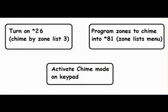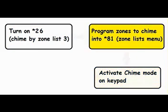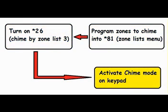A quick summary of what we just covered: you turned on field number 26, chime by zone list; you programmed the chiming zones into asterisk 81; then you activated the chime mode on the keypad. And of course, you can do it in reverse — create your chime list, then turn on field 26, then activate the chime mode.